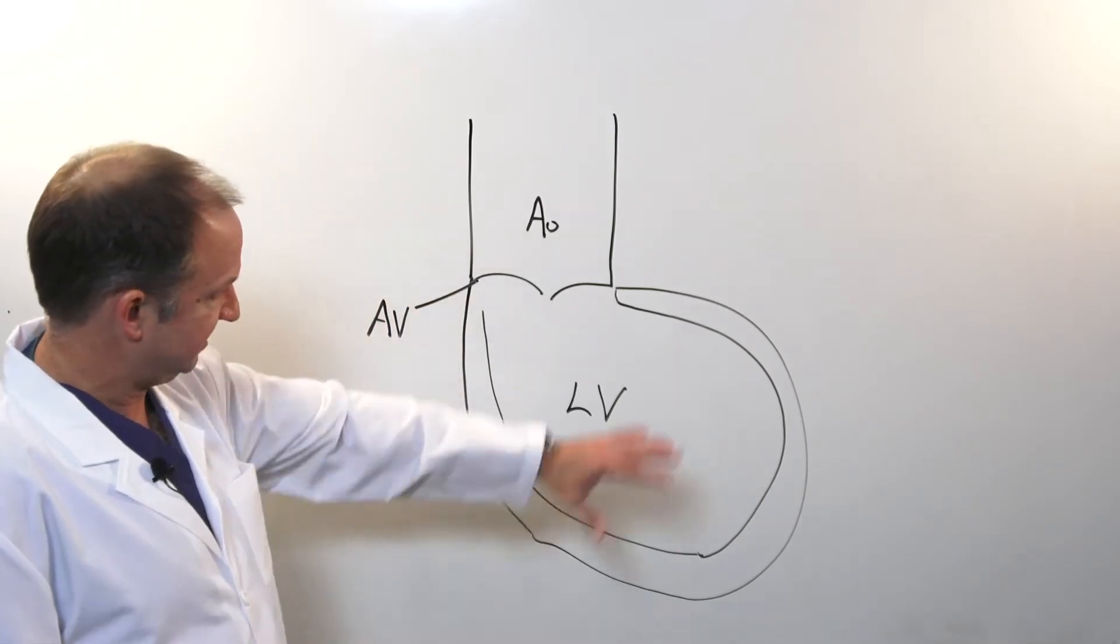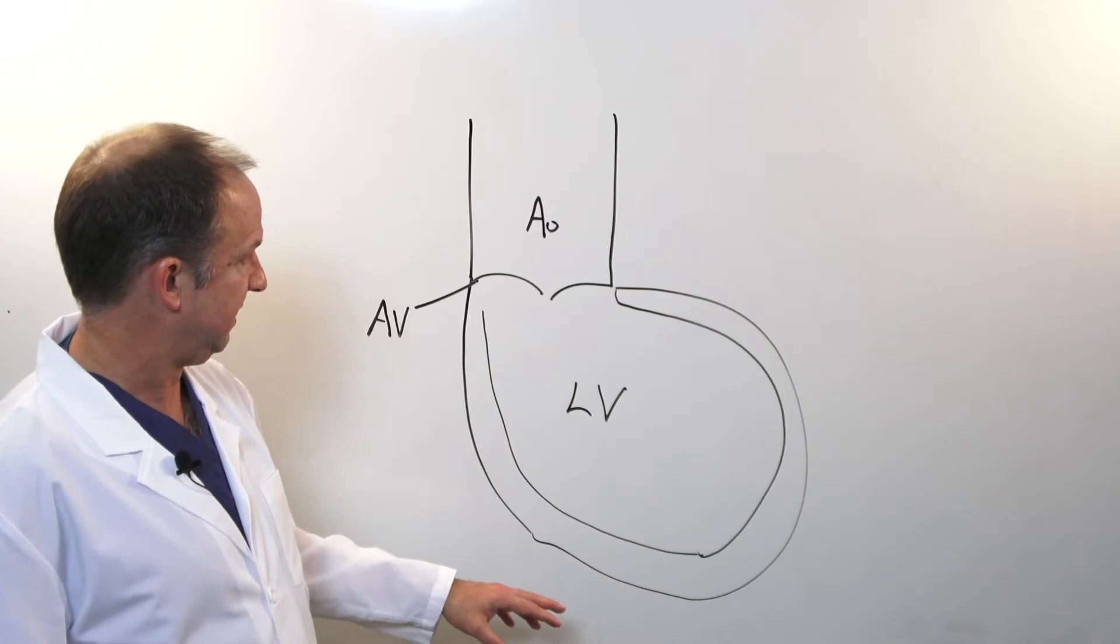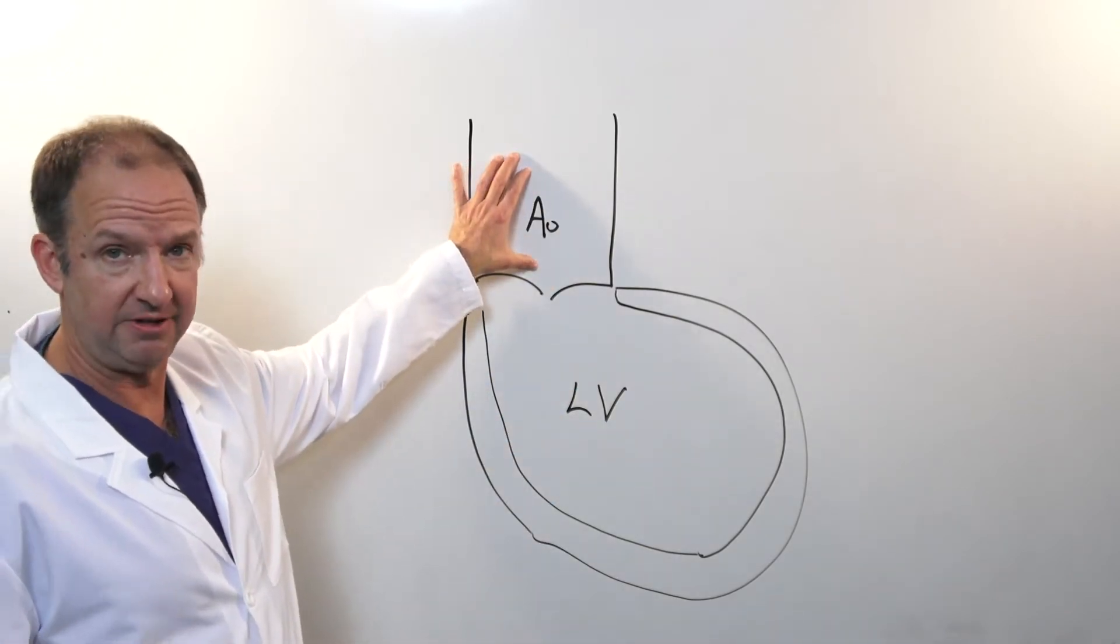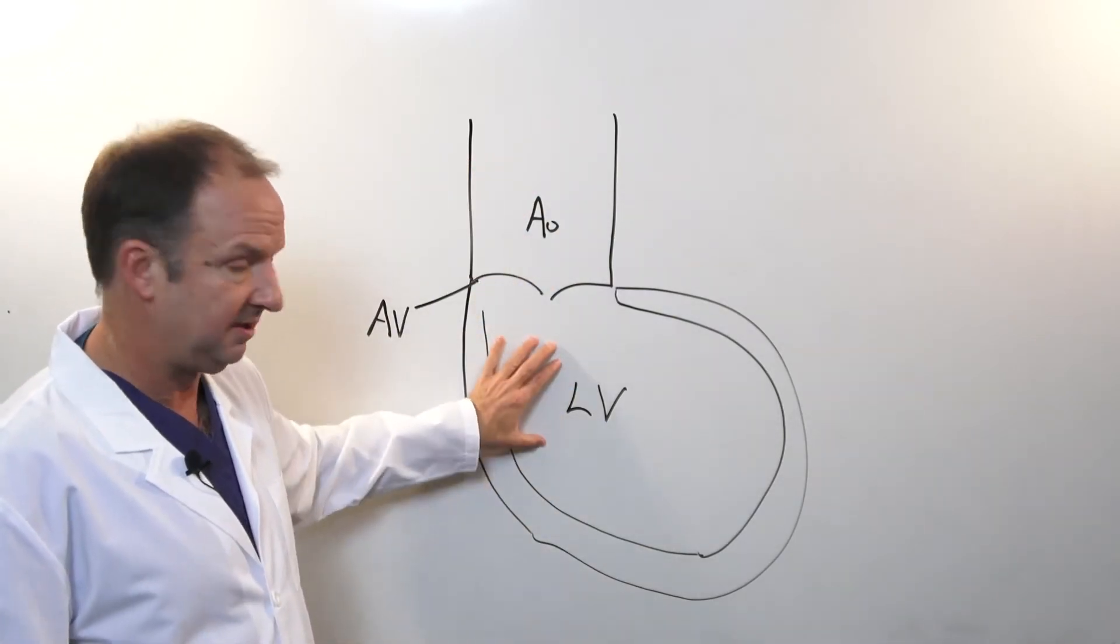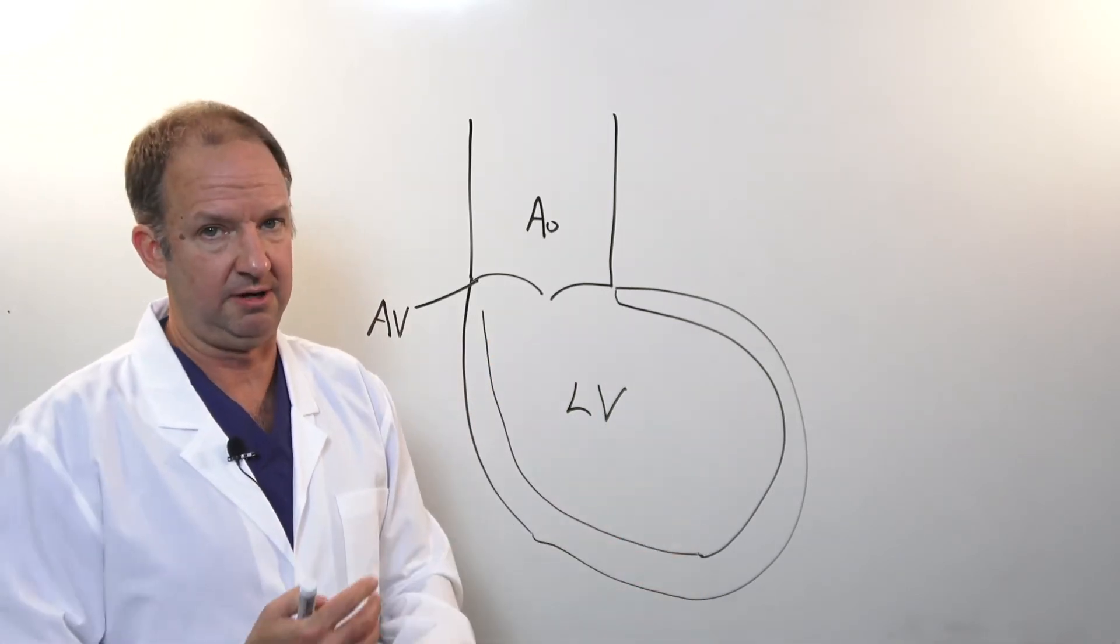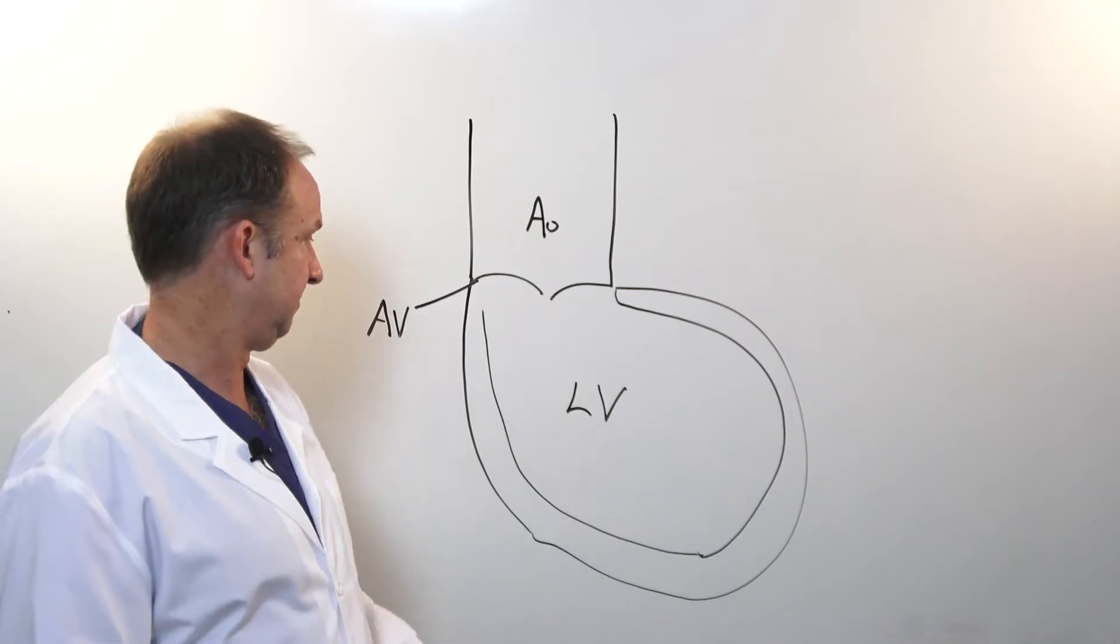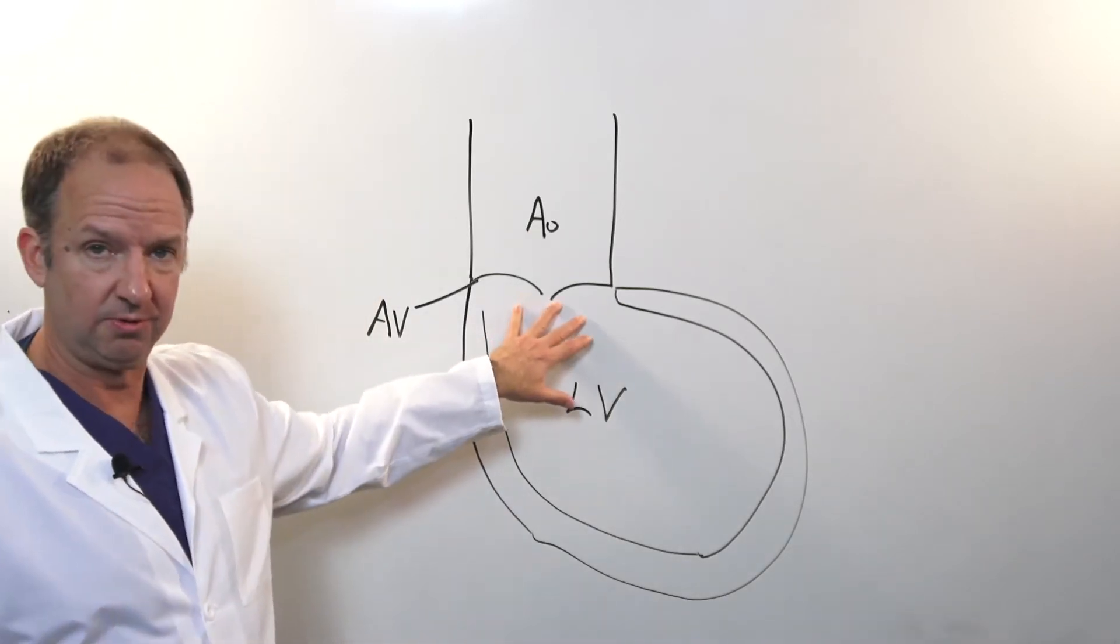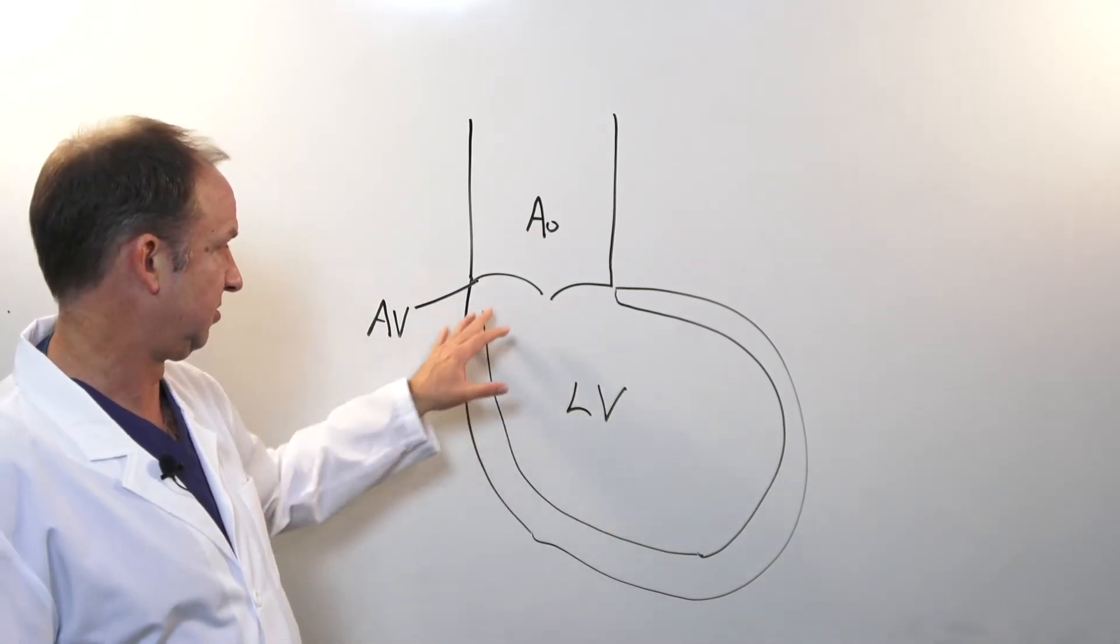As a review, this is the left side of the heart. I've drawn the aorta, which is the major vessel that comes out of the left ventricle. The left ventricle is a large chamber that pushes oxygenated blood to the rest of the body, and then there's the aortic valve, the door through which the blood has to go.